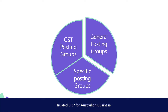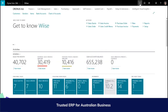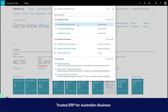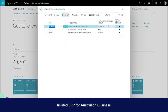GST posting setup defines the tax percentages and calculation types that apply to who you sell to and buy from and what you sell and what you buy. GST posting groups determine the goods and services tax applied to transactions either through documents such as sales or purchases. As well as calculating the amount of tax, it also directs to the general ledger accounts used. You would have seen in the general posting setup video that you can have these GST posting groups apply automatically based on the general posting setup, customers, vendors, plus goods and services.